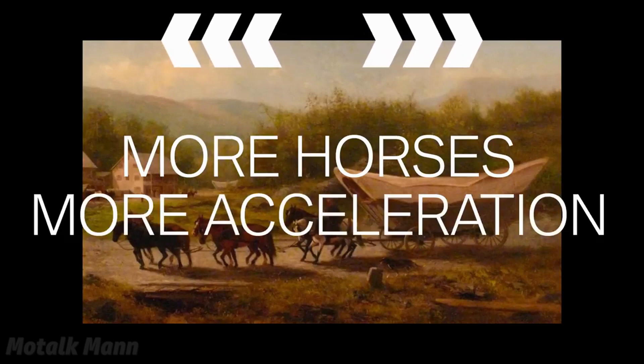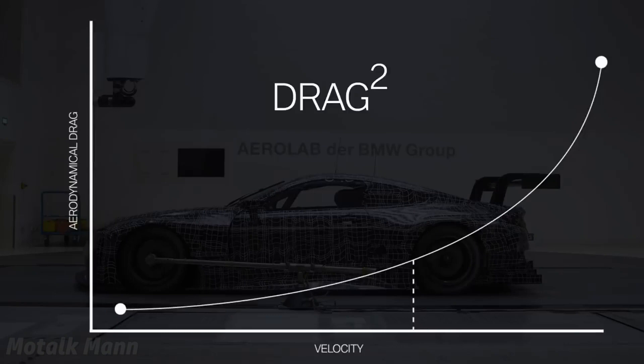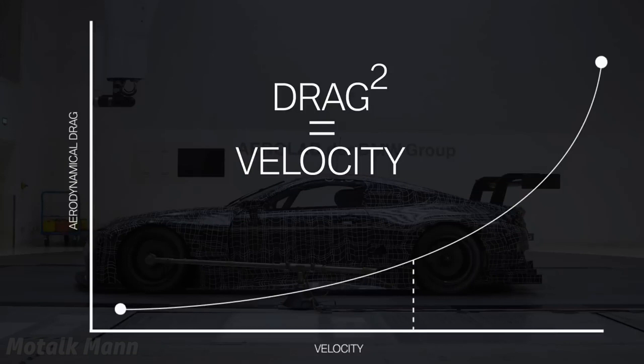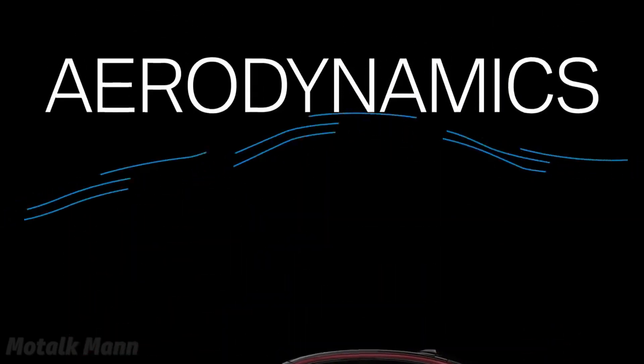As always, it isn't as easy as it sounds. Let's start with aerodynamics. Some of you might know that aerodynamic drag rises quadratically with velocity and is the most limiting factor when it comes to achieving high speeds. But we're talking 0 to 60 right now — aerodynamics? Not so relevant.